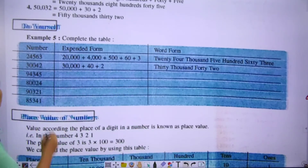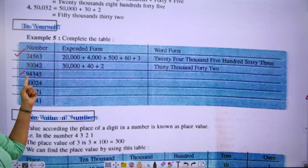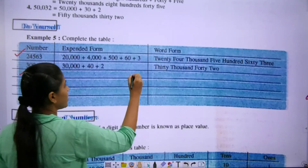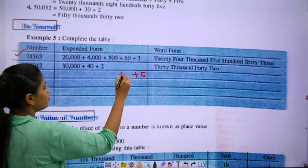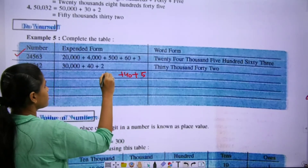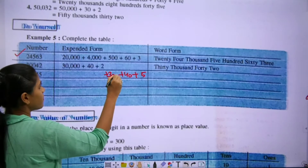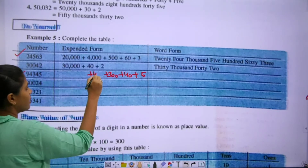Let's start. The first has been done for you. We move to the next part. The place values are: ones, tens, hundred, thousand, ten thousand. Now we see how to write it — starting with the ones, then tens, then hundreds, then ten thousands.